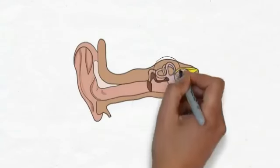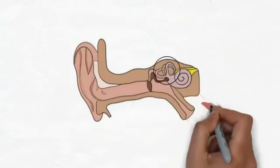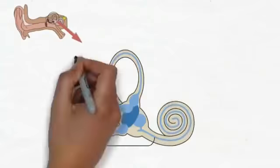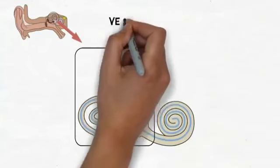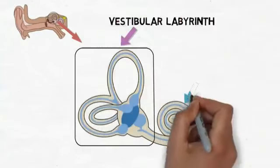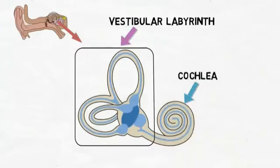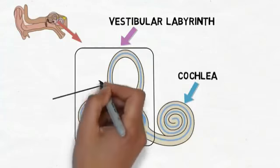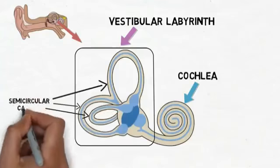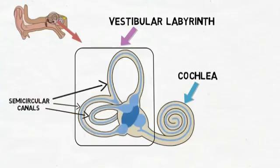The main components of the vestibular system are found in the inner ear in a system of compartments called the vestibular labyrinth, which is continuous with the cochlea. The vestibular labyrinth contains the semicircular canals, which are three tubes that are each situated in a plane in which the head can rotate.